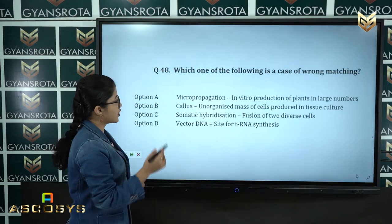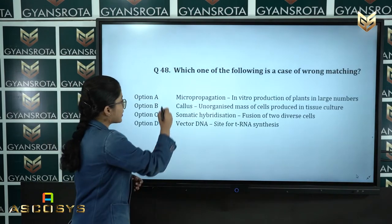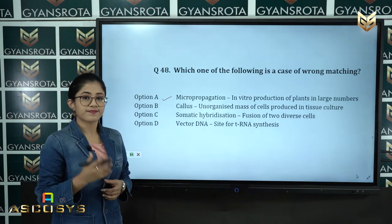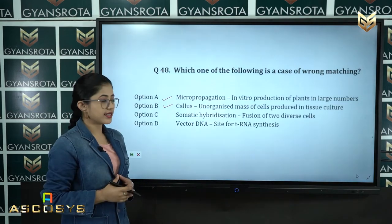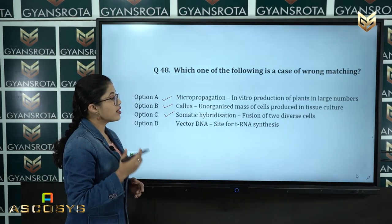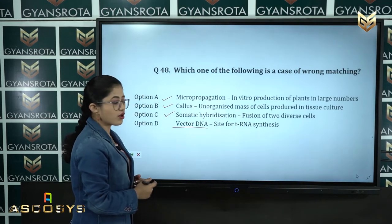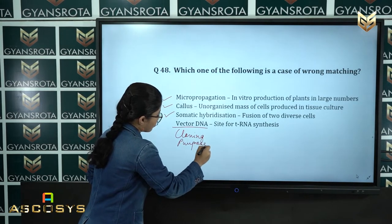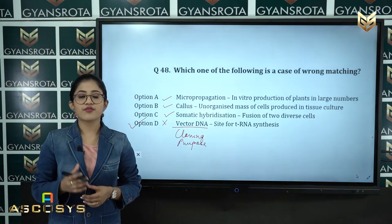Option A (micropropagation), option B (callus), and option C (somatic hybridization) are all correct statements. Option D is incorrect because vector DNA is used for cloning purposes, not as a site for tRNA synthesis. Therefore, option D is wrongly matched and is the correct answer.